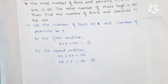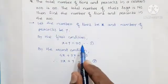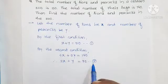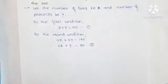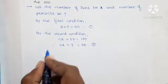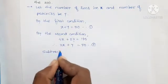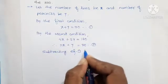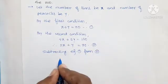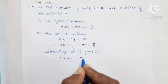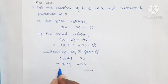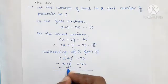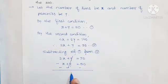We divide the second equation by 2 to simplify, giving 2x plus y equals 70. Now we have two equations: equation 1 is x plus y equals 50, and equation 2 is 2x plus y equals 70. The coefficient of y is the same in both equations, so we subtract equation 1 from equation 2. The y terms cancel. 2x minus x gives x, and 70 minus 50 gives 20. Therefore x equals 20.